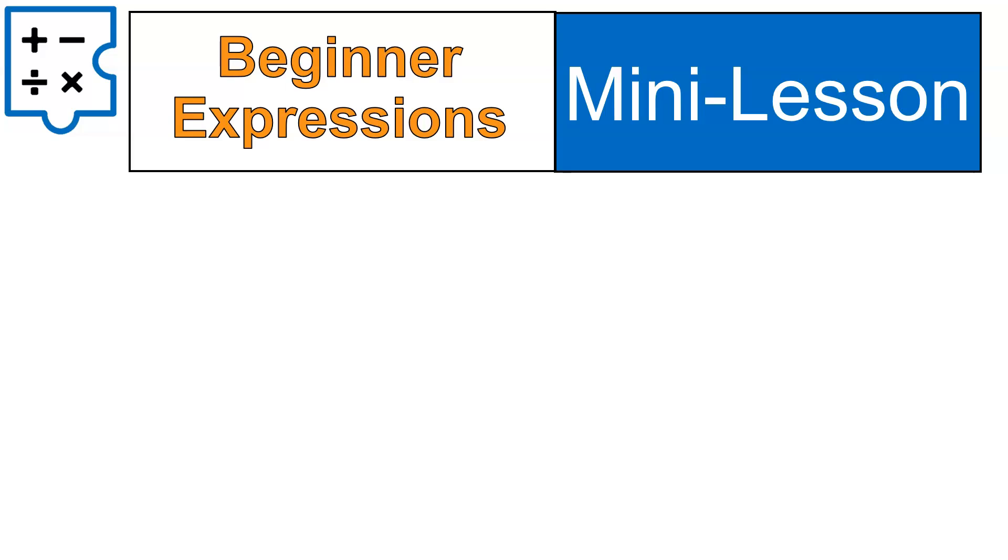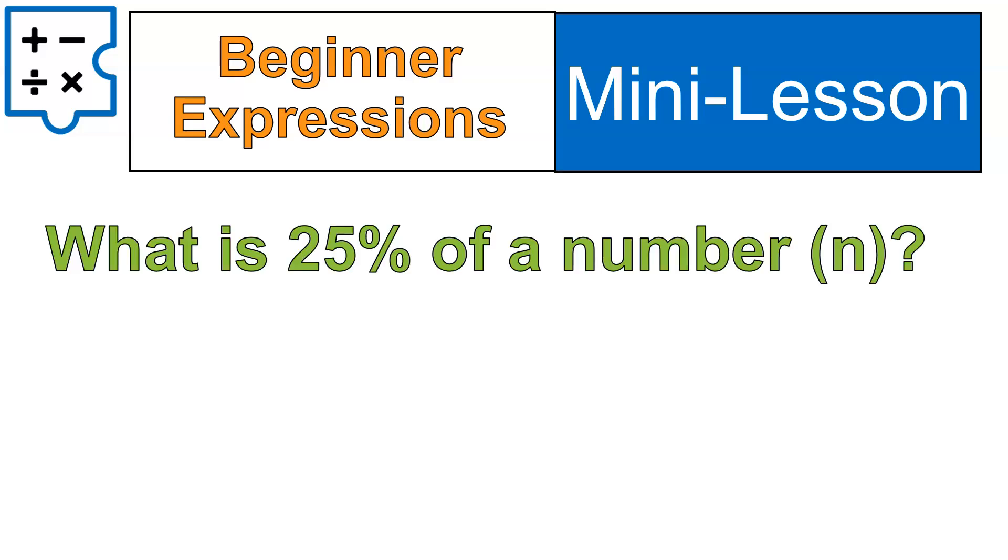Let's look at our beginner expression. What is 25% of a number, n? So I've given us the percentage, 25, the variable, n, and called it a number. What we're doing now is writing an expression for what is 25% of a number. What we do is we take out the really most important pieces there, 25%, and we'll write that as a decimal. Of is multiplication, and a number, n, we're just going to write as the variable. So that's it. 0.25 times n will give us this expression.